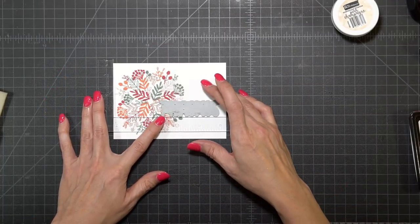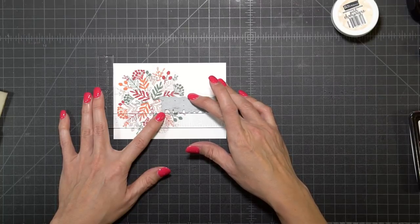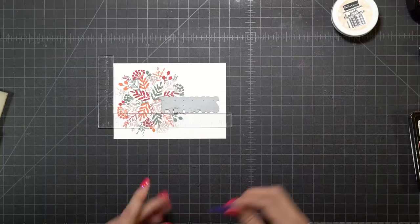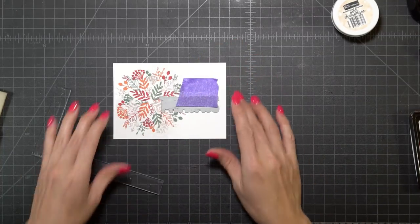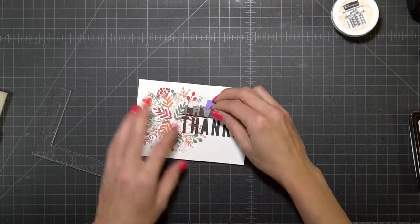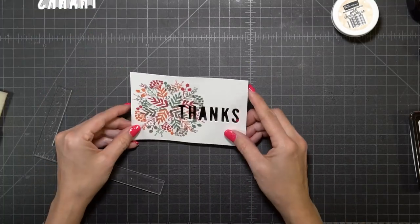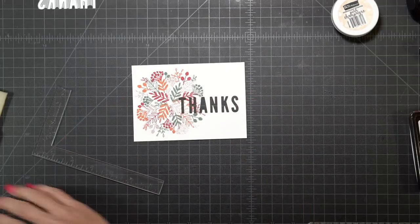The turnabout kit does have a coordinating die that comes with it, so I'm just going to use my creative corner to make sure that the die is straight. Once I run that through my die cutting machine, I want to hold on to the inner portion of the letter A because I am going to use it in my project later.